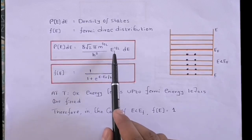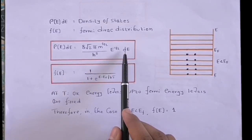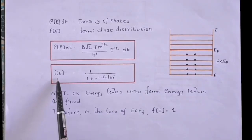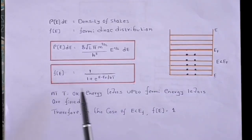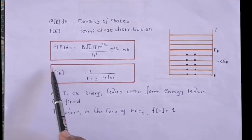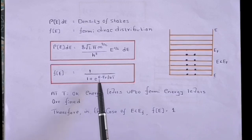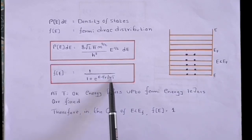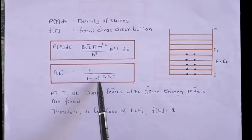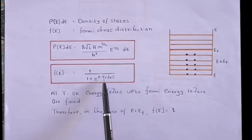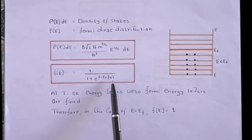The expression for the Fermi factor is: F(E) = 1 / (1 + exp((E − E_F) / kT)), where E is the energy level, E_F is the Fermi energy level, k is Boltzmann's constant, and T is the temperature.